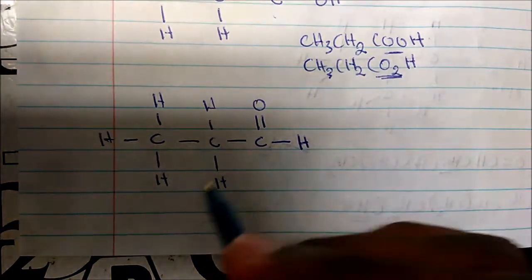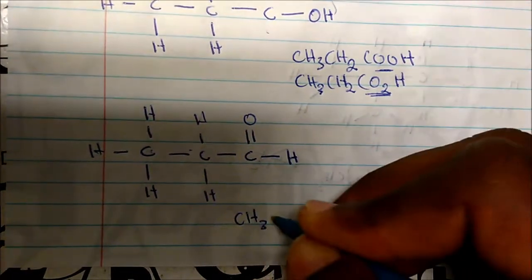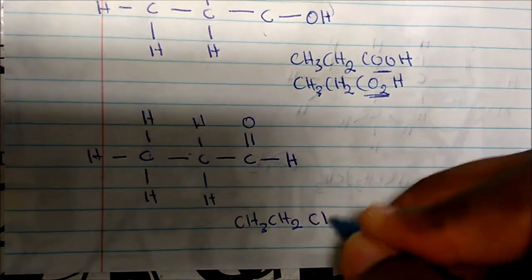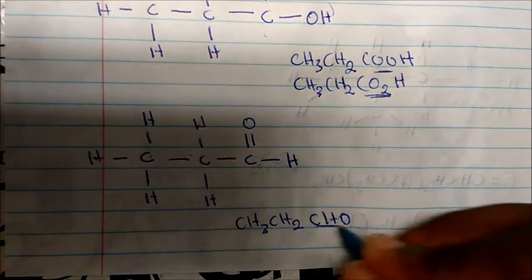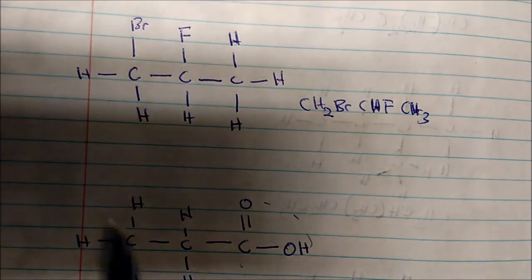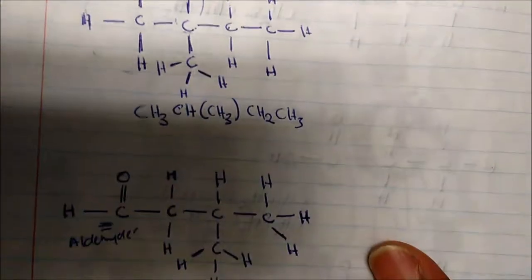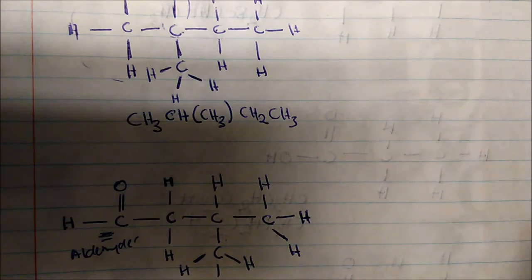For the last one, we have CH3, CH2, and then the aldehyde functional group. So we rewrite it as CH3-CH2-CHO — remember, CHO is how we represent an aldehyde. The overall pattern is: it's all about the carbon chain, what's branched off it, and what's bonded to it. Anything bonded off the main carbon chain goes in parentheses.